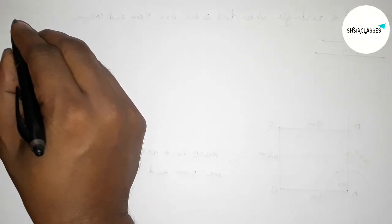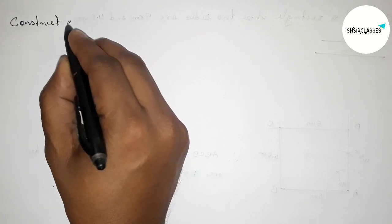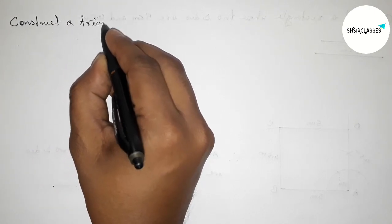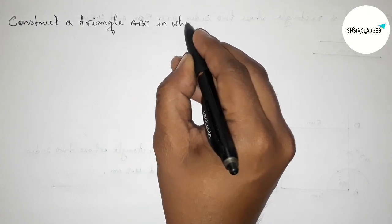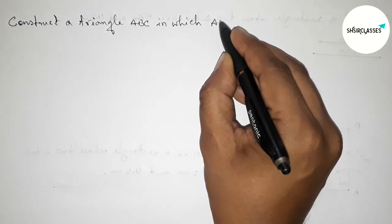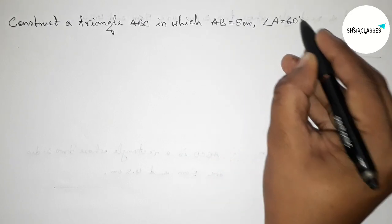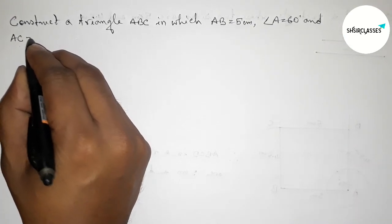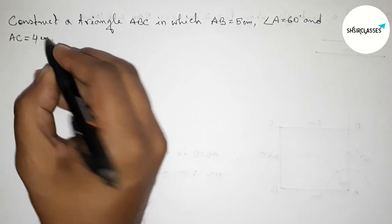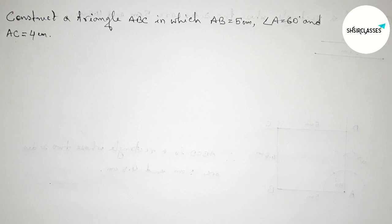Hi everyone, welcome to SI Share Classes. Today in this video we have to construct a triangle ABC in which AB equals 5 centimeter, angle A equals 60 degree, and AC equals 4 centimeter. Please watch the video till the end. Let's start.